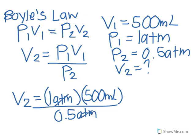The atmospheres cancel out. And we multiply that, then divide 500 by 0.5, and we get 1,000 milliliters of helium. Thank you.